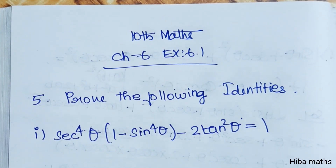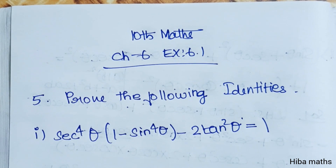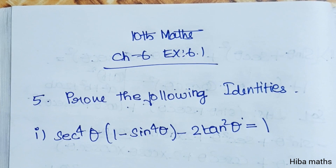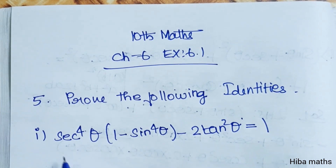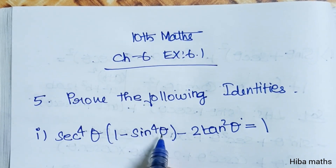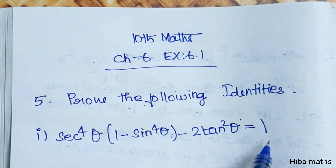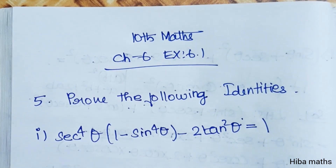Hello students, welcome to HivaMax 10th Standard Marks Chapter 6, XI 6.1, 5th question: to prove the following identities. First subdivision: to prove sec⁴θ into (1 minus sin⁴θ minus 2sin²θ) is equal to 1.